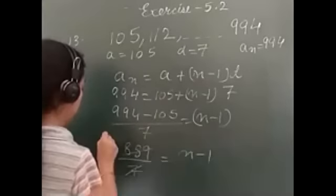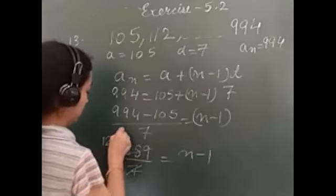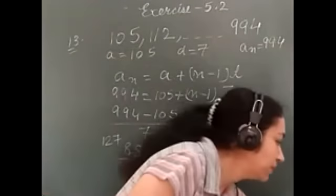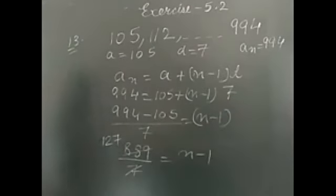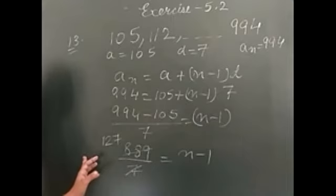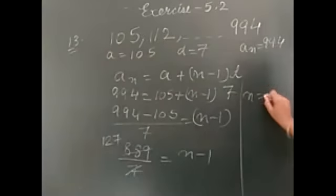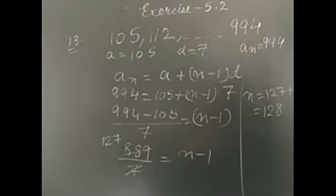So, this is equal to n minus 1. Cancel. 127. So, n minus 1. Value of n minus 1 is 127. That means n will be equal to... 1 will be shifted here. It will be added to 127. So, you will get n equals 127 plus 1. That is 128. Right. So, there are total 128 such numbers which have three digits and which are divisible by 7.